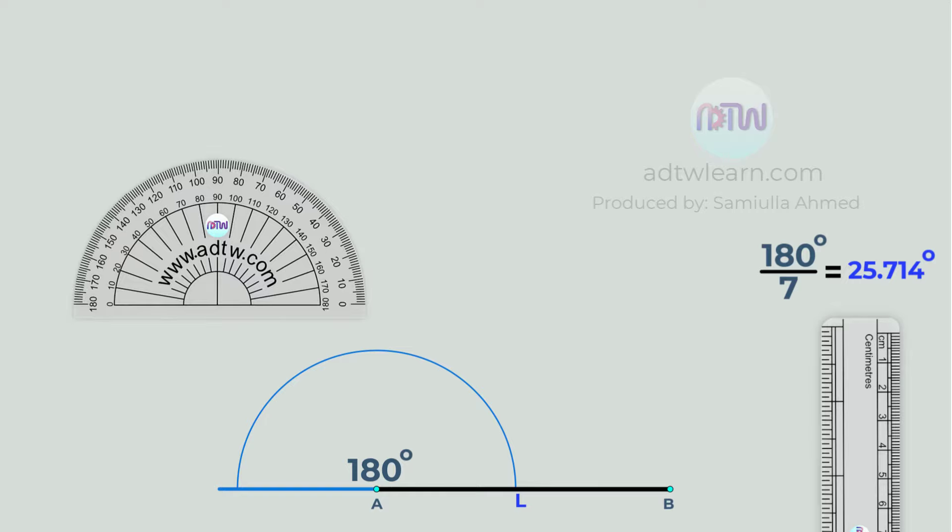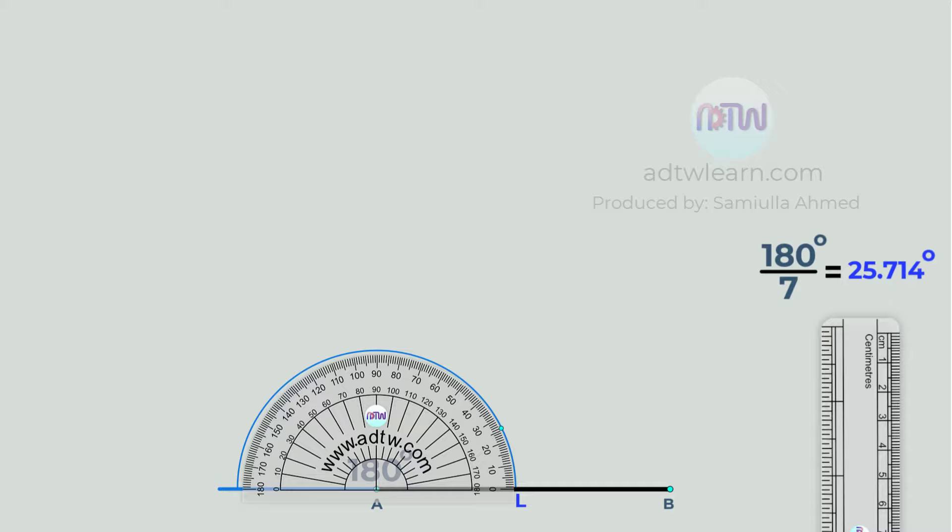Take a protractor and place it here, such that its center coincides with point A, and mark approximately 26 degrees, because it's not possible for a human to mark exactly 25.714 degrees.